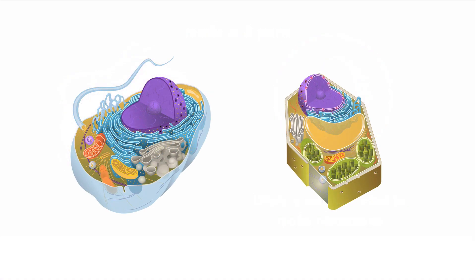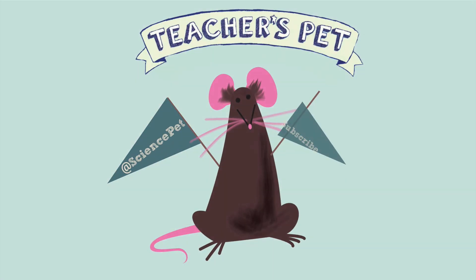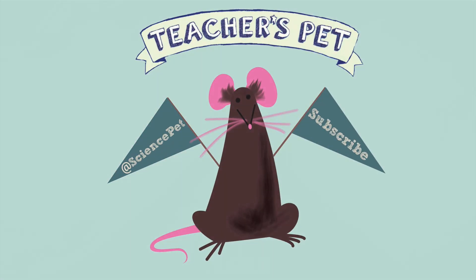So those are the parts of the eukaryotic cell that most have in common. Next time we'll look at special parts that plant cells have in addition to these. Thanks for watching this episode of Teacher's Pet. Don't forget to like and subscribe, and follow me on Twitter at SciencePet.